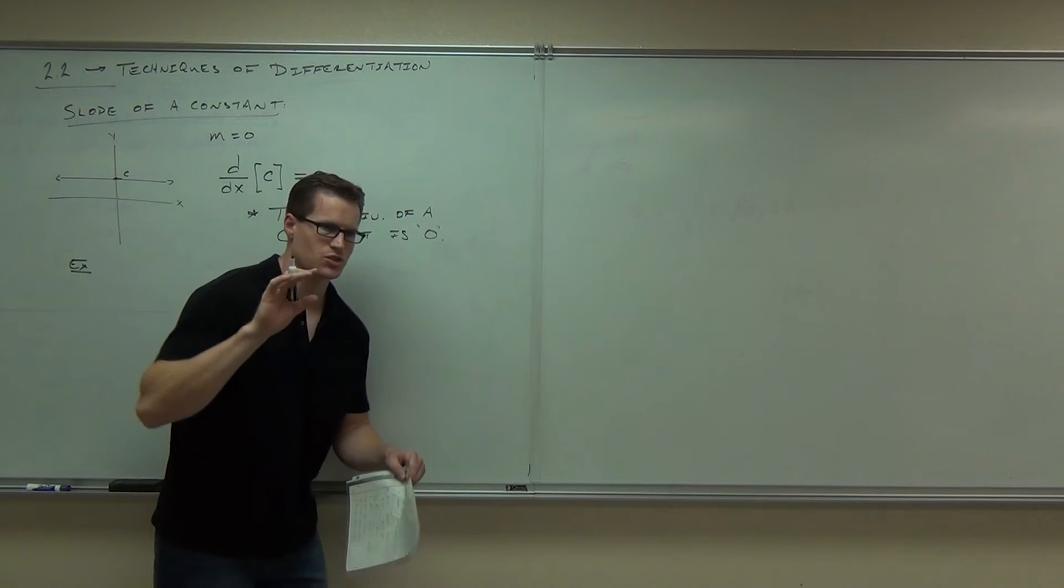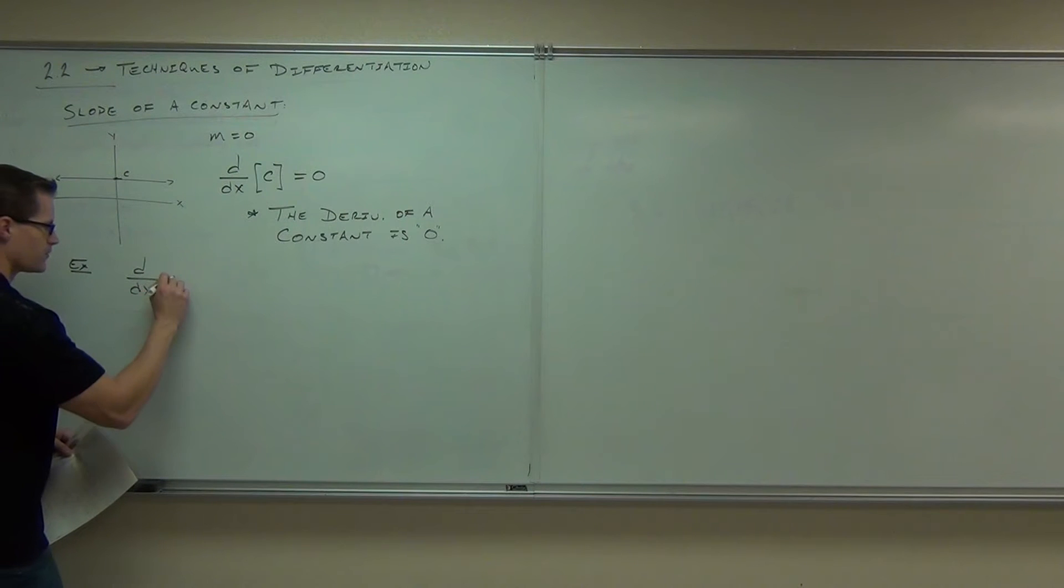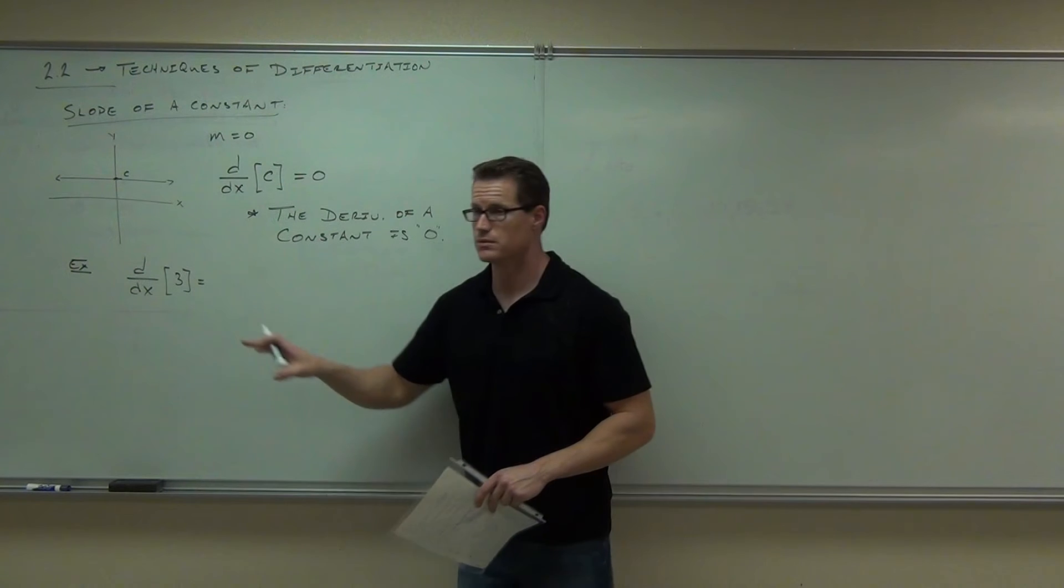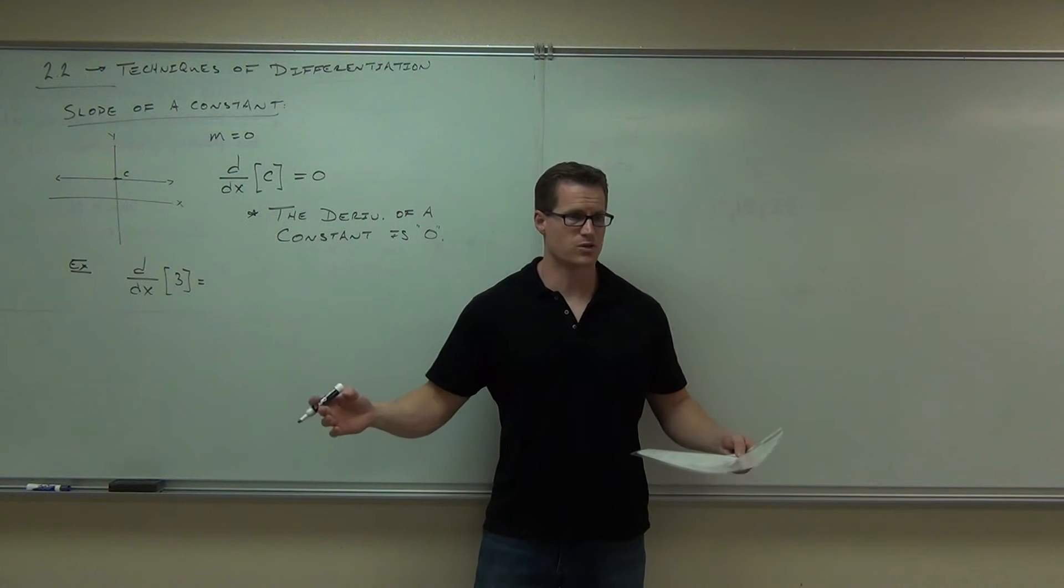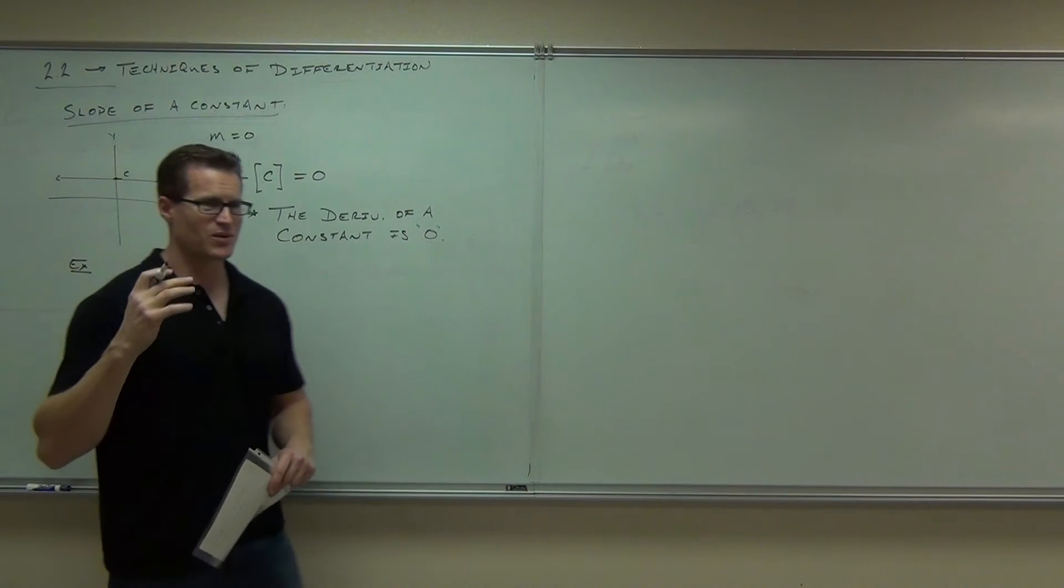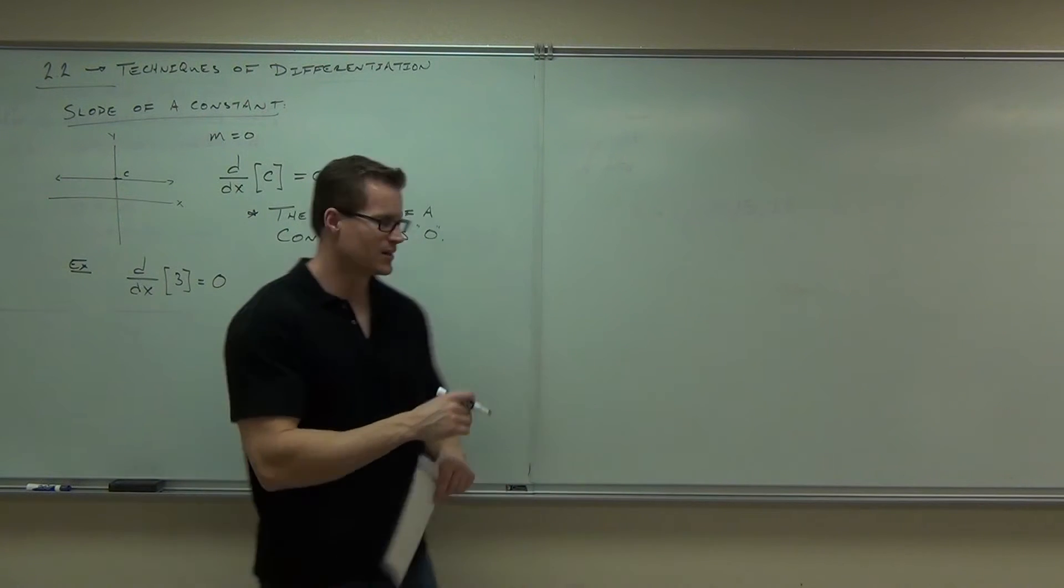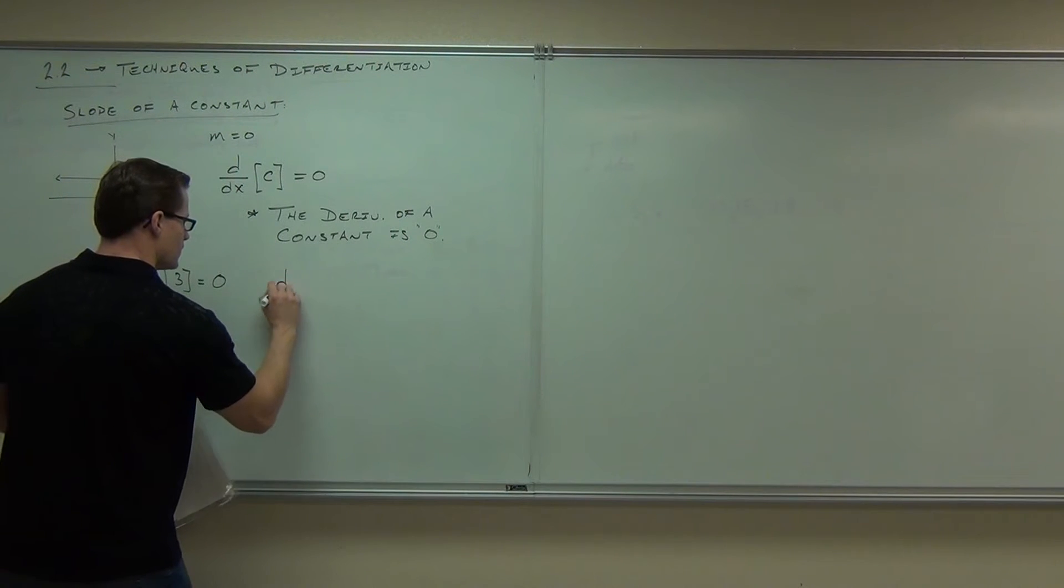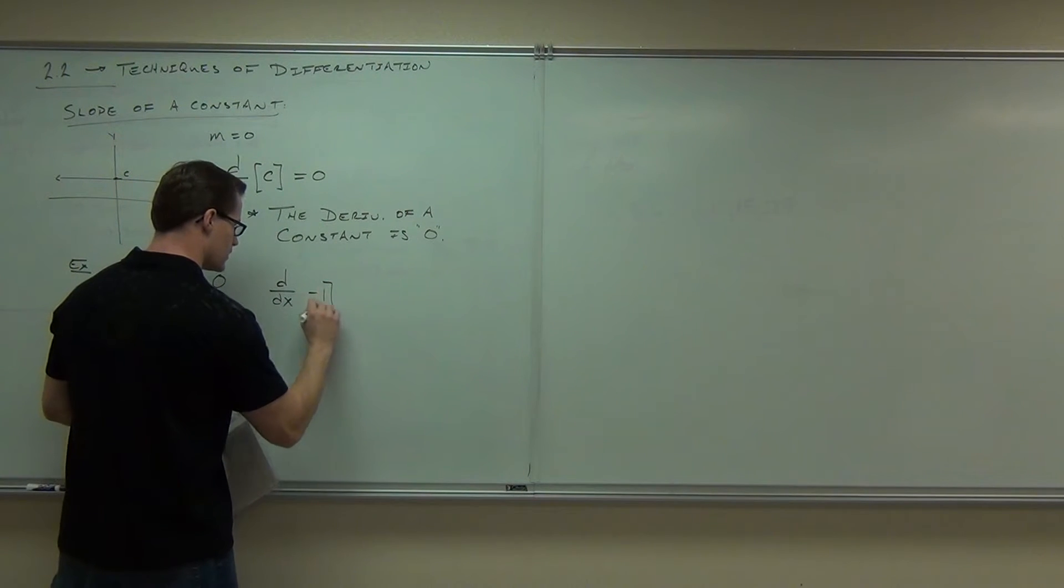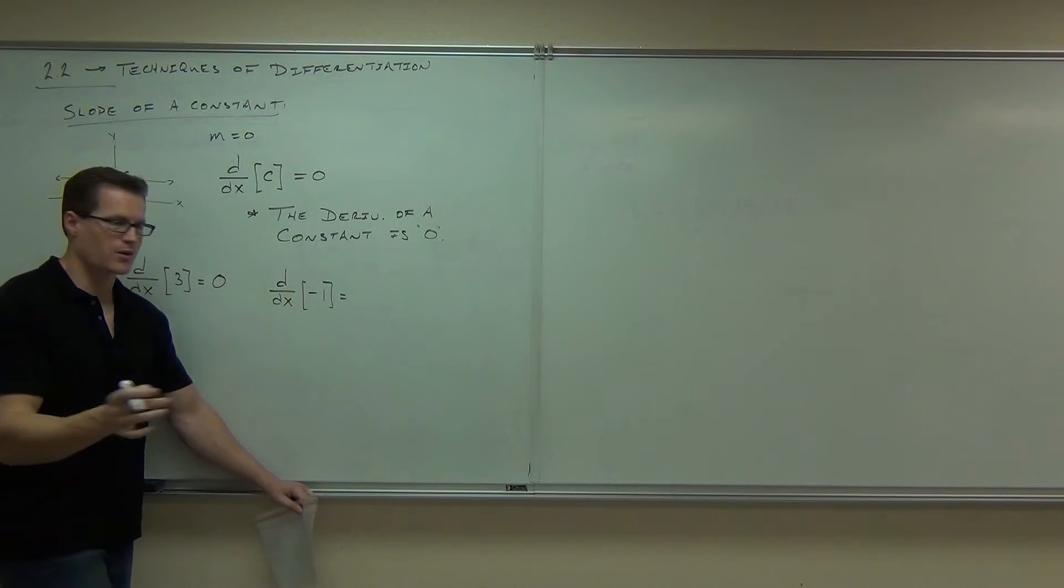So in English, this says the derivative of a constant is zero. Basic examples just to make sure that you get it. What's the derivative of three? Three is a constant. What's the derivative of a constant? No work at all. That's fantastic. I love it. No more limit, right? If you have a constant, the derivative is just zero. That's easier. What's the derivative of negative one? Zero. No thought at all. The derivative of a constant is zero.